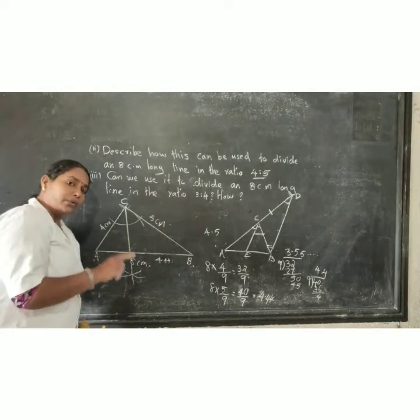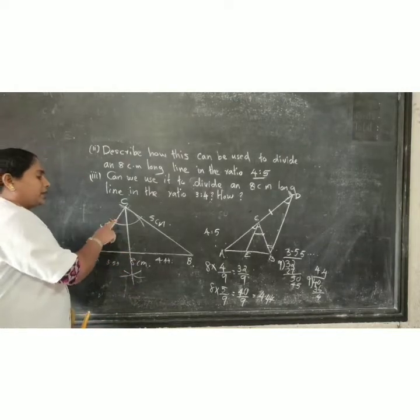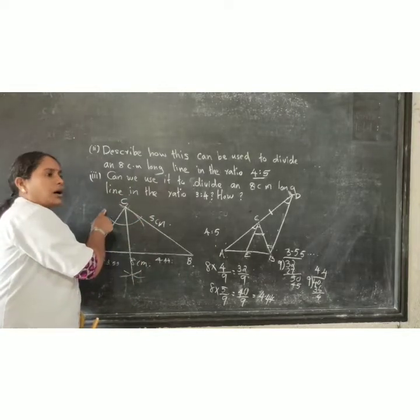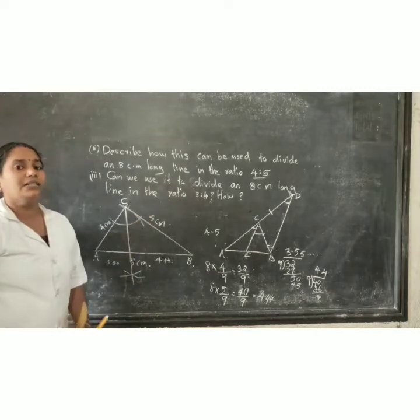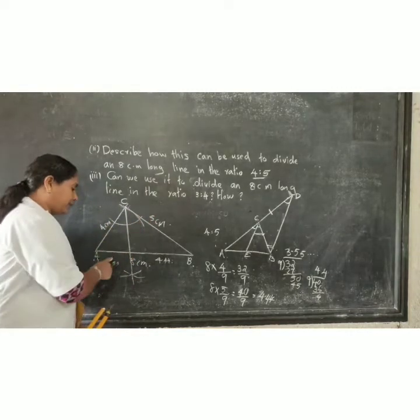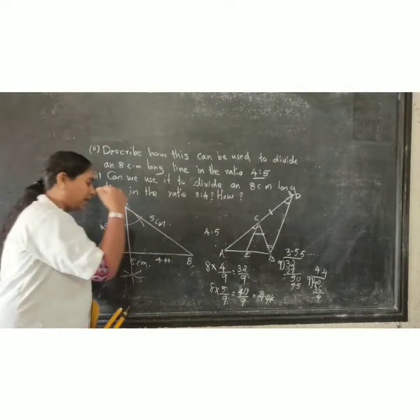This is the theorem. The angle bisector is divided in the ratio is equal to the opposite side ratio. Therefore, divided ratio 4 is to 5. Here also, 4 is to 5.